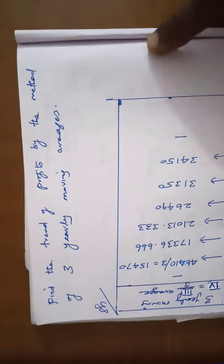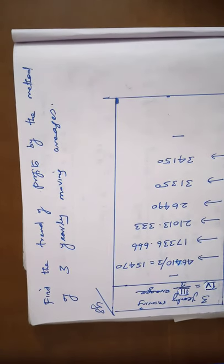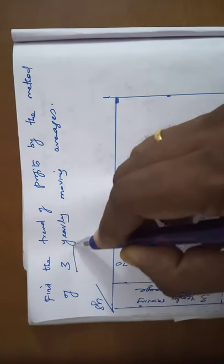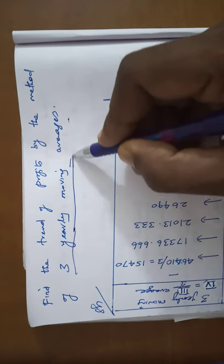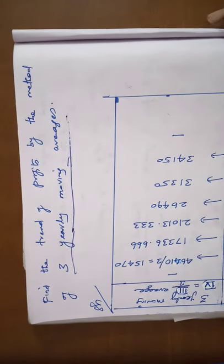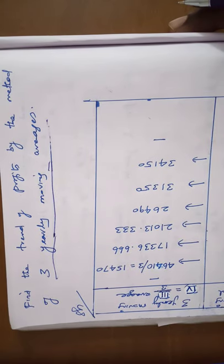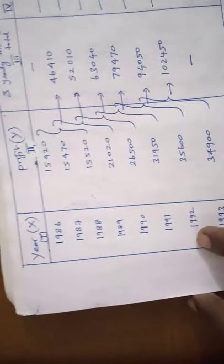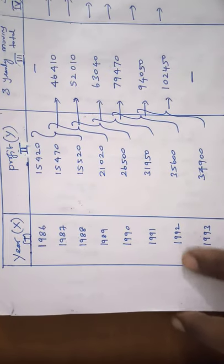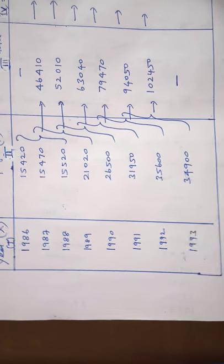Our aim is to find the trend of profits by the method of 3-yearly moving averages. This problem can be solved using the 3-yearly moving averages method. The solution can be taken as follows: First, you write the year from 1986 to 1993.